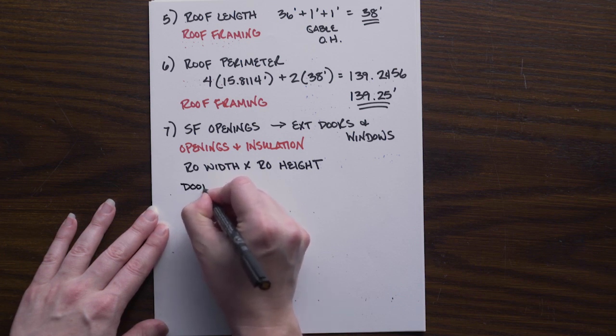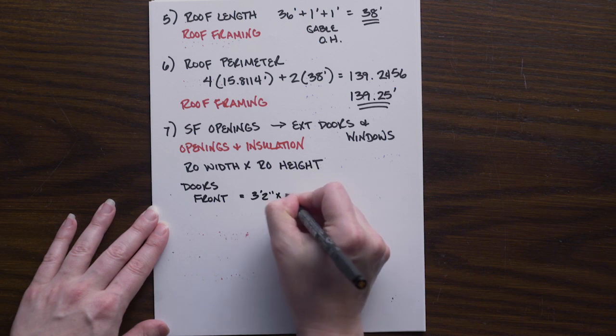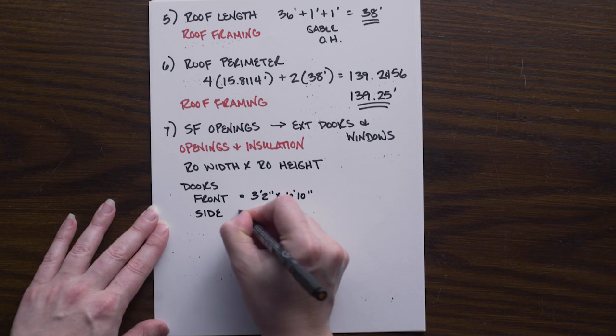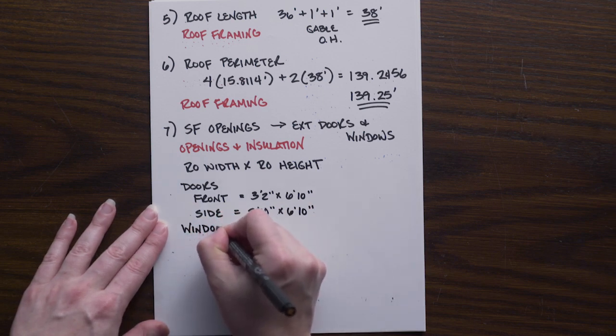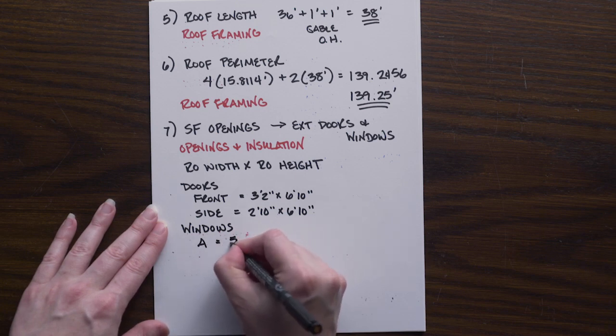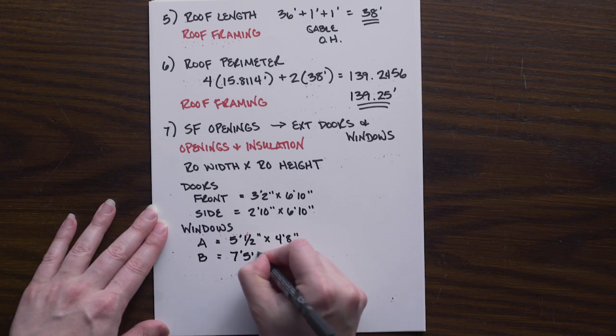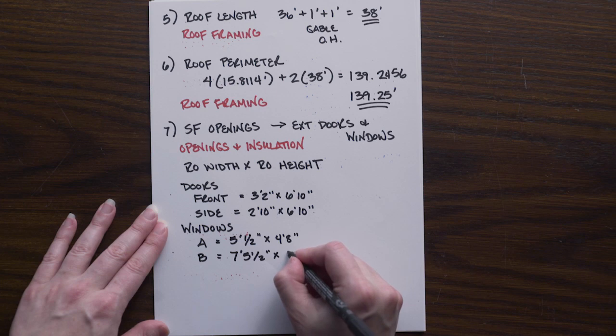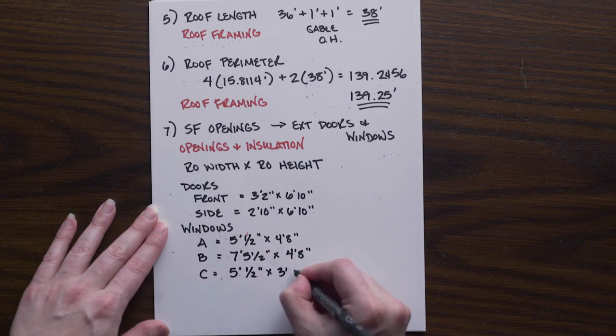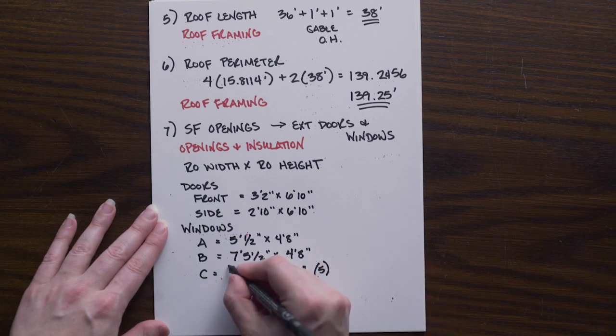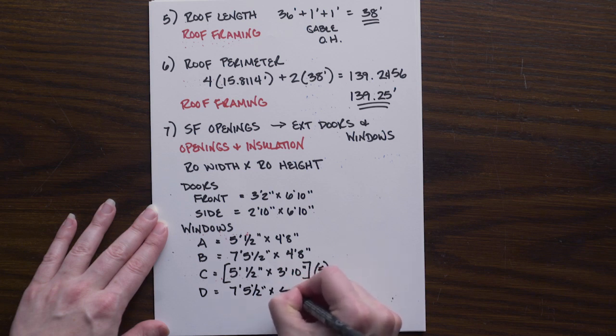So starting off, if we're looking at our doors, our front door is 3'2" by 6'10". Our side door is 2'10" by 6'10". For our windows, the A windows, we have 5'1/2" by 4'8". The B windows are 7'5 1/2" by 4'8". C windows are 5'1/2" by 3'10". And make sure you remember that there are five of these C windows. And the D windows are 7'5 1/2" by 4'1".